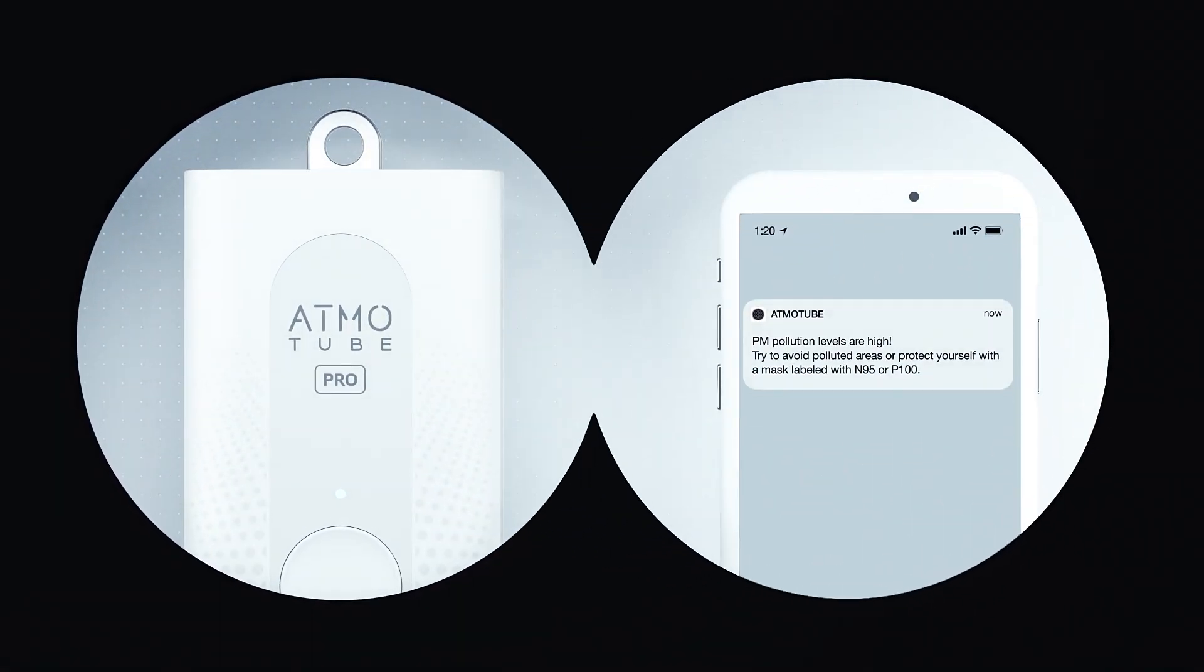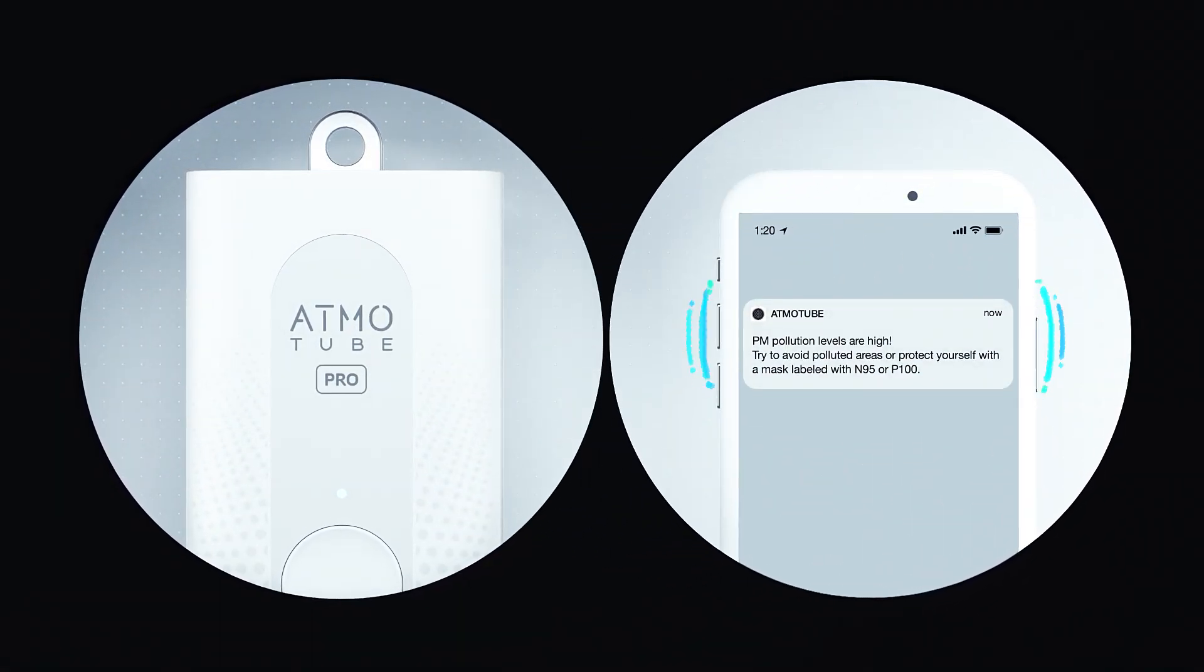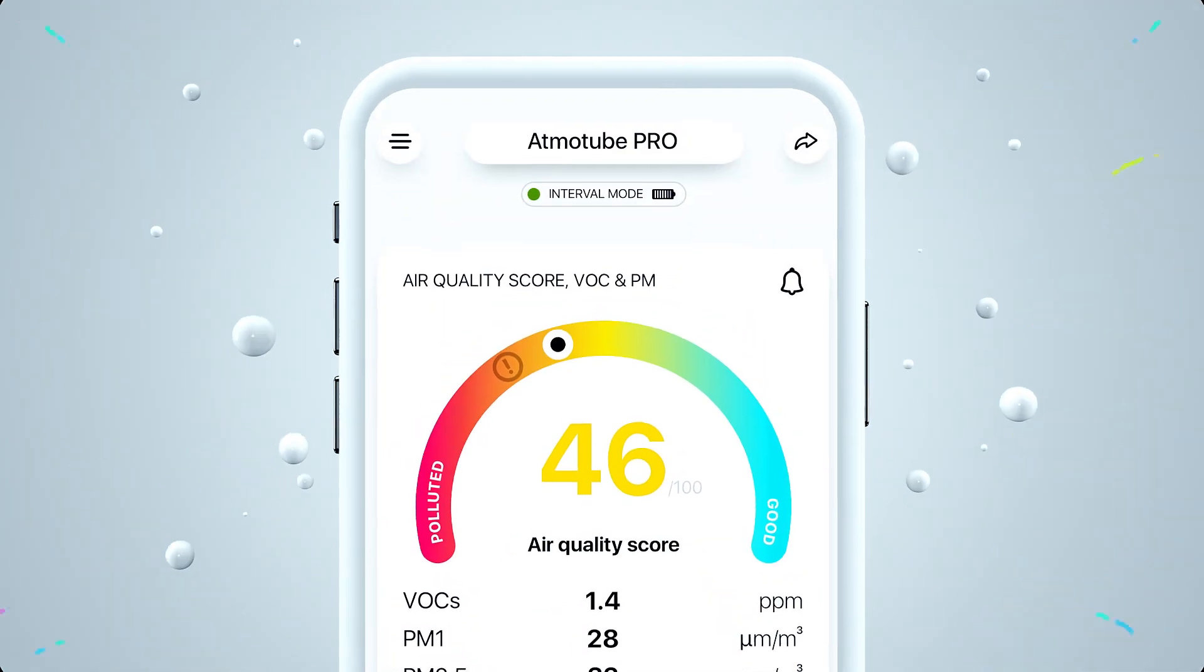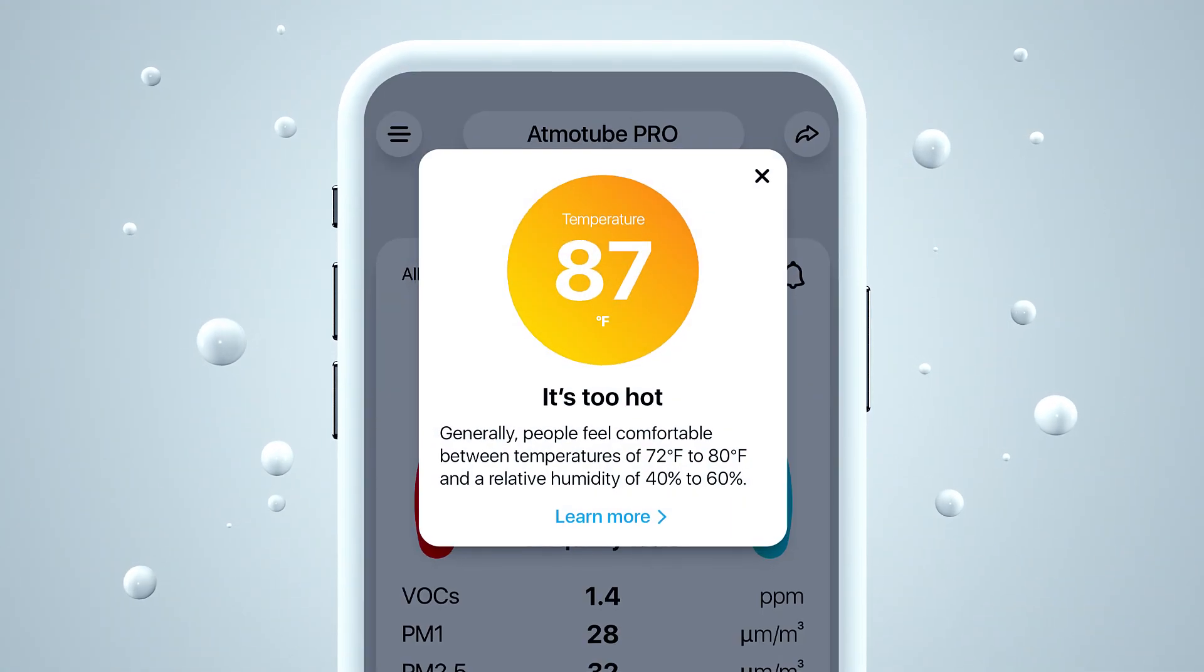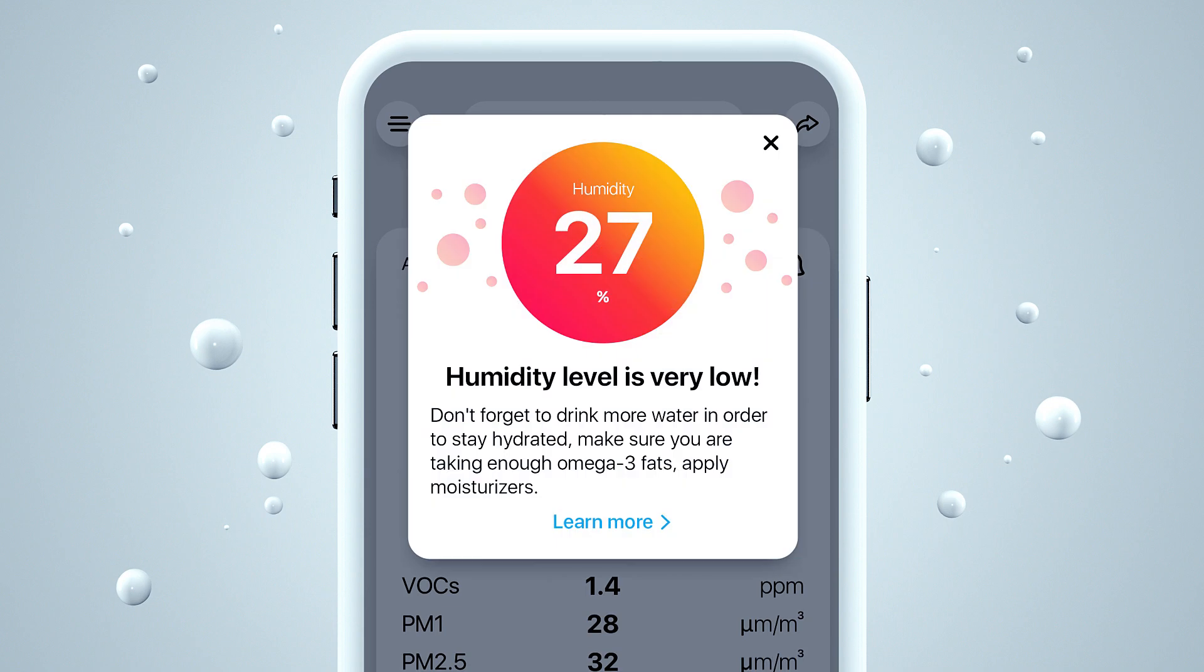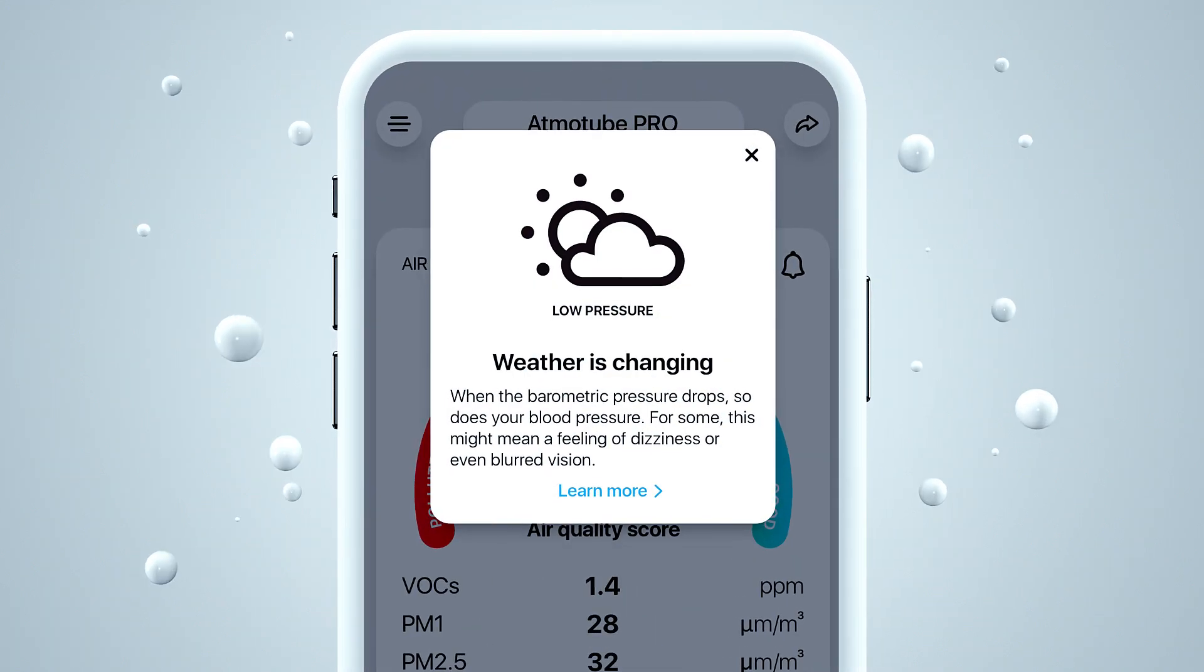Like a canary in a coal mine, it will immediately alert you if the air around is unsafe. AdmoTube Pro is also a weather station, so it measures temperature, humidity, and atmospheric pressure, all in real time.